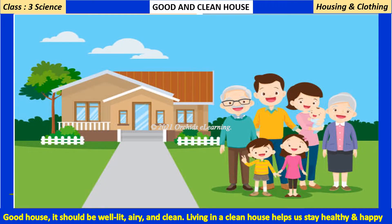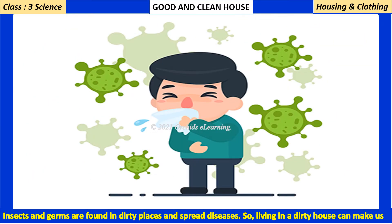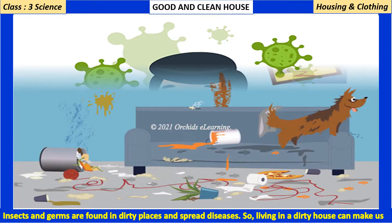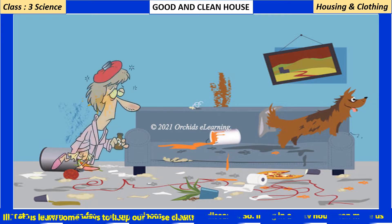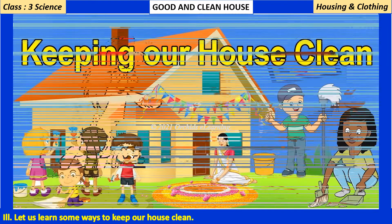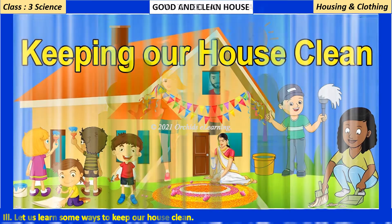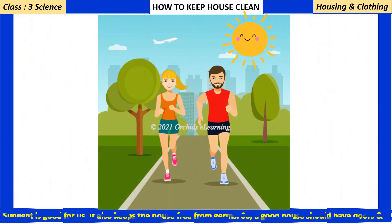There are three essential features of a good house: it should be well-lit, airy, and clean. Living in a clean house helps us stay healthy and happy. Insects and germs are found in dirty places and spread diseases.